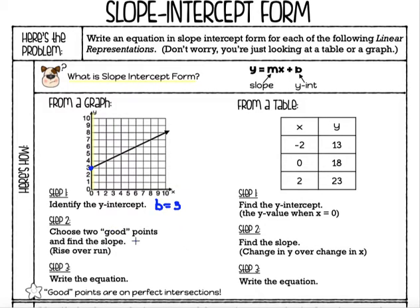Then we're going to choose two good points. A good point means that they fall on perfect intersections. Sometimes the graph will already have the points on there for you, but in this case it doesn't, so we have to find them ourselves. Starting at my y-intercept — that's a very good point because it's right on an intersection. Traveling up the line, some points are in the middle and not perfect, but others are right on intersections. We only need two good points.